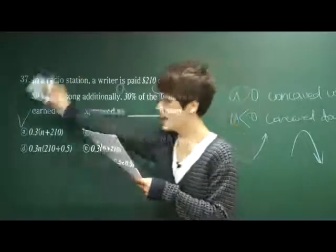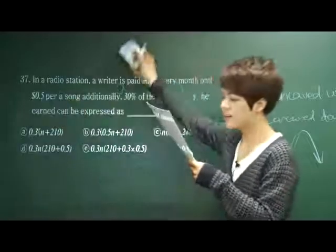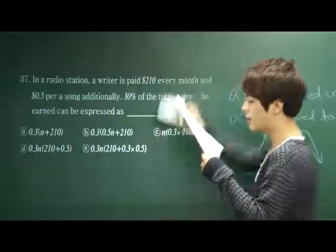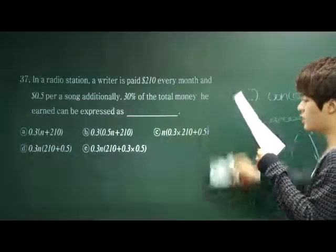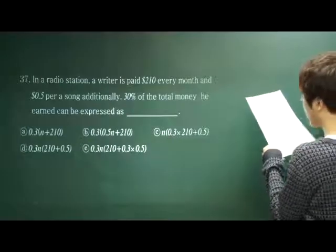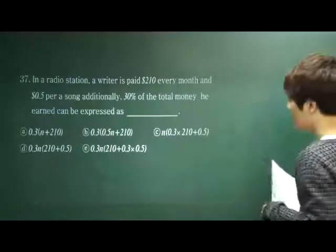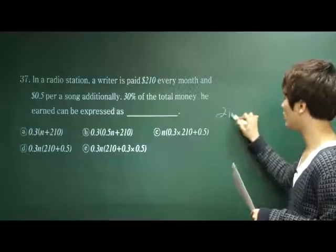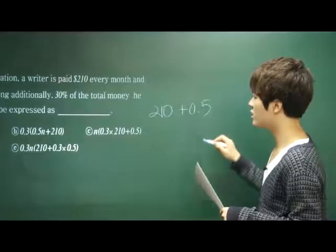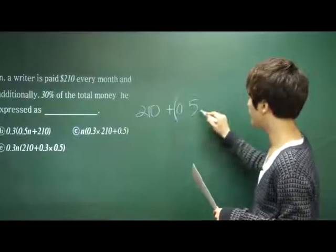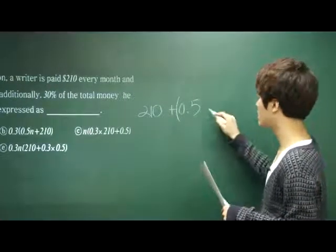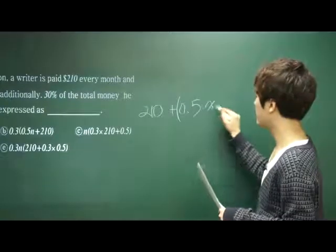What about 37? In the radio station, the rider is paid $210 every month and $0.50 per song additionally. There is a base salary of $210 per month plus 0.50 per song additionally — that is 0.5 times x, where x is the number of songs.